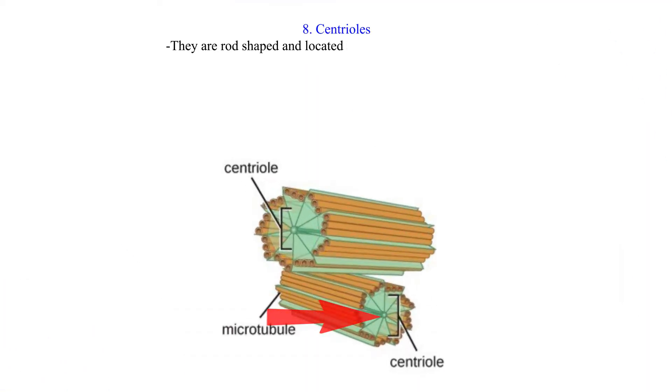They are rod-shaped and located outside the nuclear membrane. They are absent in plant cells but present in animal cells.